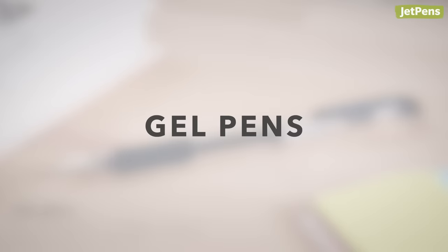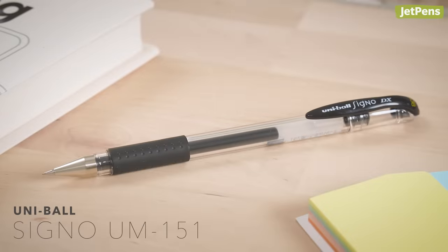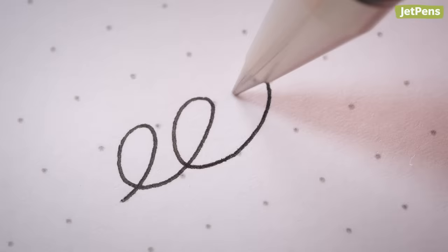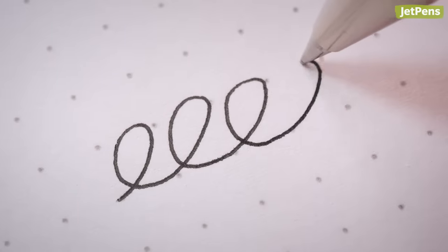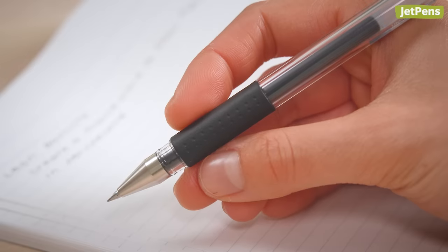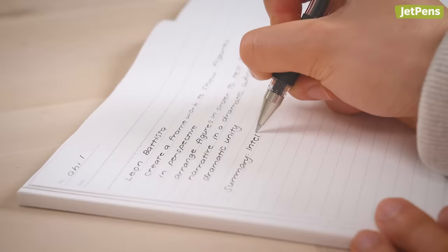Gel Pens Capped. The UniBall Signo UM151 is a bestseller at JetPens, and for a good reason. Its conical tip is sturdy, and its smooth, pigment-based ink is water-resistant. It has a firm rubber grip that's comfortable to hold, and keeps the pen from slipping during long writing sessions.